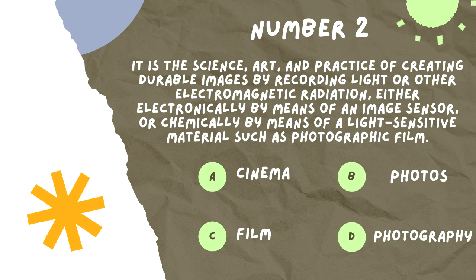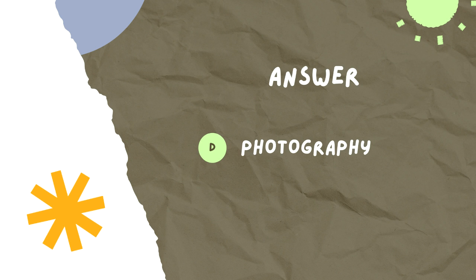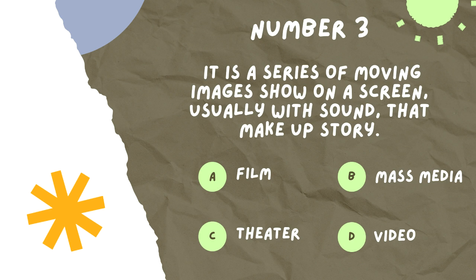Number two: It is the science, art, and practice of creating durable images by recording light or other electromagnetic radiation, either electronically by means of an image sensor or chemically by means of a light-sensitive material such as photographic film. A, cinema. B, photos. C, film. D, photography. The answer is D, photography.